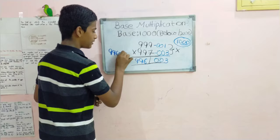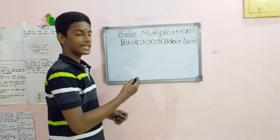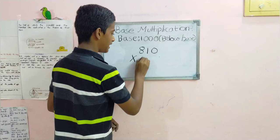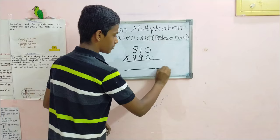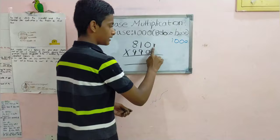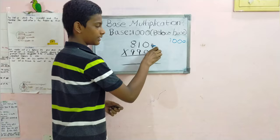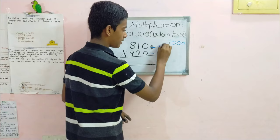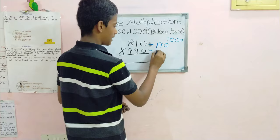Let's look at another example. Let our second example be 810 into 990. As we did in the last example, we have to find the common primary base, that is 1000. Then find out the difference. In this case, 810 is lesser than 1000 by 190, and 990 is lesser than 1000 by 010.